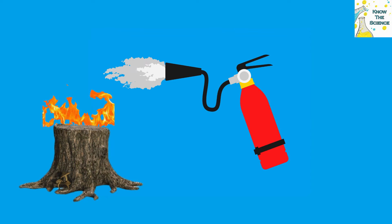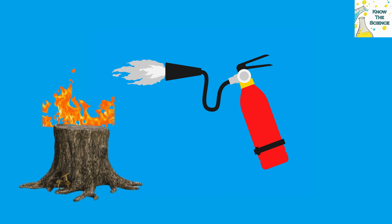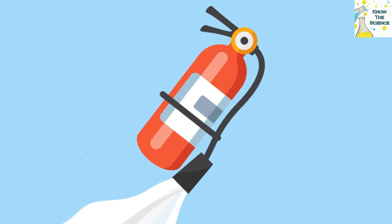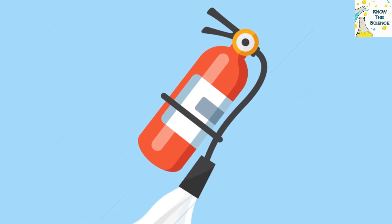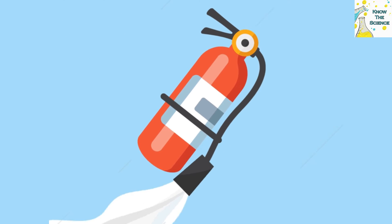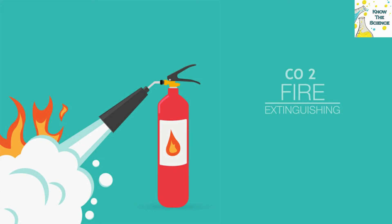It also takes away the heat element of the fire triangle, in addition to taking away the oxygen element from it. The carbon dioxide gas which comes out of the fire extinguisher is very cold and thus helps in cooling the fuel. Carbon dioxide fire extinguishers are composed of non-flammable gas, carbon dioxide, which is filled in the cylinder under extreme pressure.